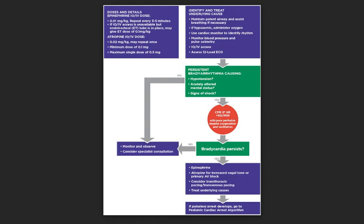For epinephrine IO/IV dosing: deliver 0.01 mg per kg and repeat every 3 to 5 minutes. If IO or IV access is unavailable but an endotracheal tube is in place, you may give an ET dose of 0.1 mg per kg. For atropine IO/IV dosing: 0.02 mg per kg, which may be repeated once. The minimum dose is 0.1 mg and the maximum single dose is 0.5 mg.